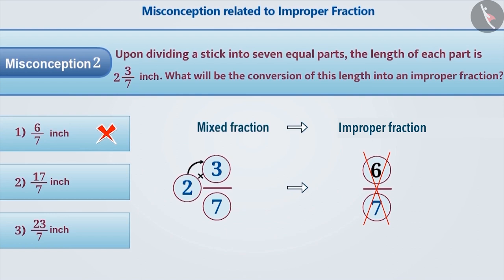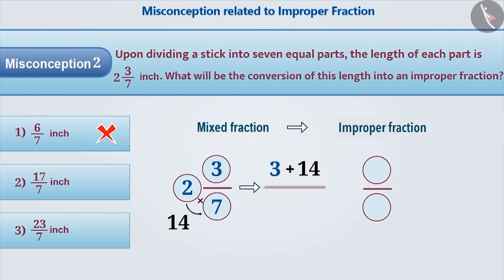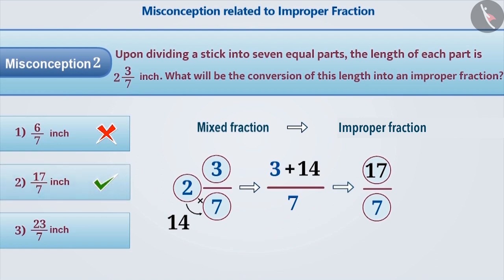The correct way is that while converting a mixed fraction into an improper fraction, we have to multiply the whole number with the denominator and add the result to the numerator. In this example, we multiply 2 with 7 and add the result to 3. By doing so, we get 17 in the numerator, and by placing 7 in the denominator, we get the improper fraction 17/7 inch. That means option 2 is correct.